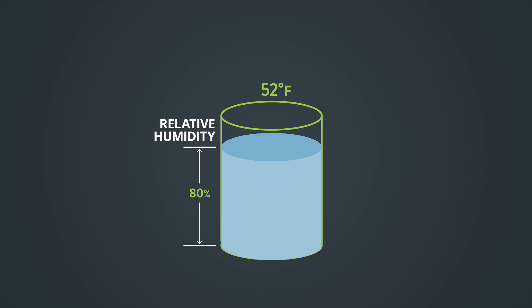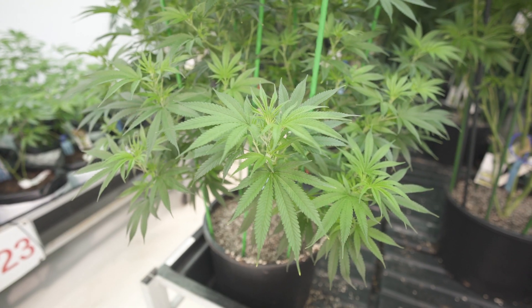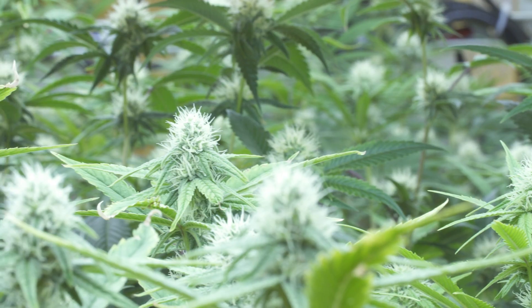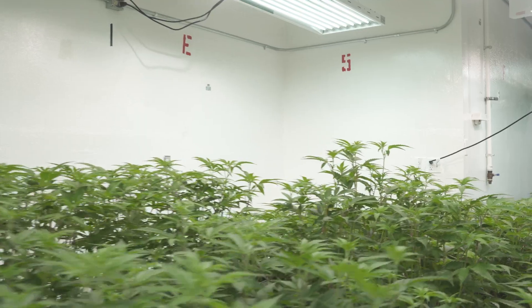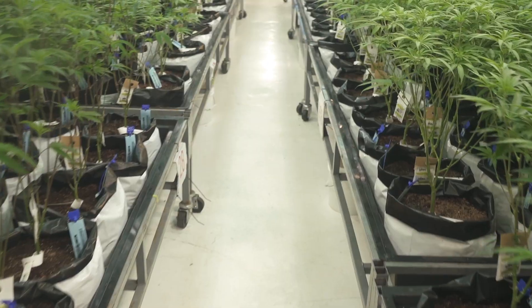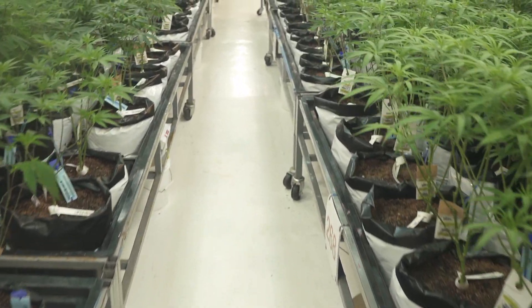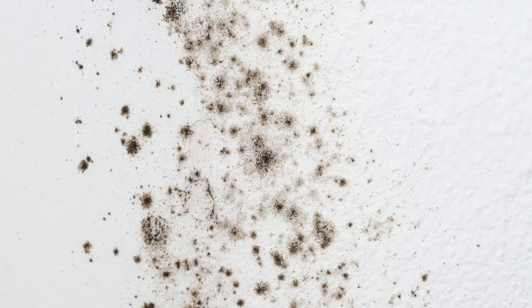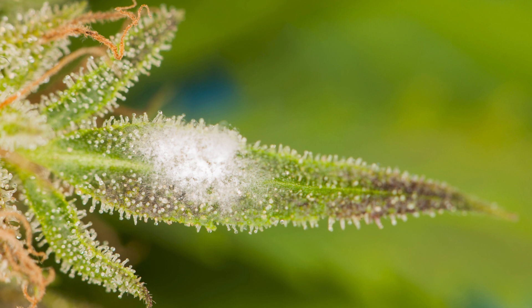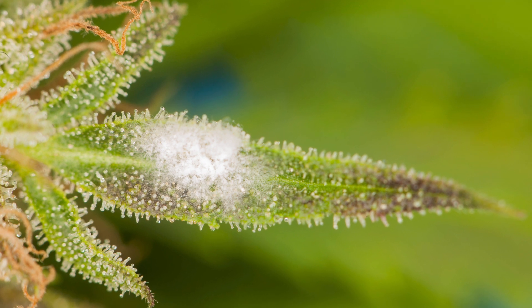The moisture that was once in the air will now condense onto any surface available — it could be leaves, flowers, the walls, the floors, the people in the room. In turn, increasing the risk of mold and mildew, damaging crops within a matter of days.